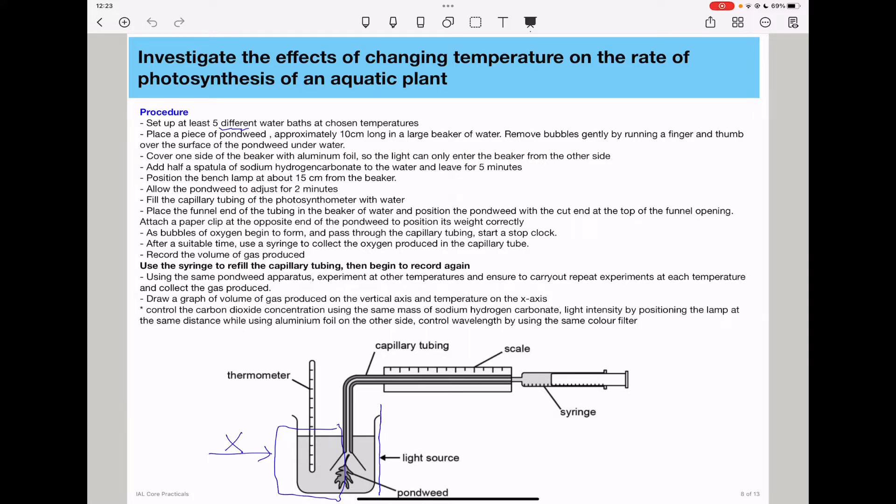If it's positioned at a specific distance, the plant is exposed to the same constant amount of light in every experiment. Allow the pondweed to adjust for two minutes. This allows it to get used to the new conditions in which it has been placed.